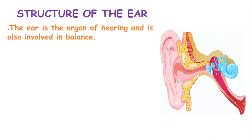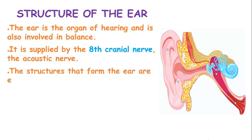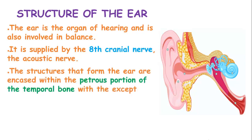The ear is an organ of hearing and also involved in balance. It is supplied by the eighth cranial nerve, known as the acoustic nerve. The structures which form the ear are encased in the petrous portion of the temporal bone, with the exception of the auricle or the pinna.